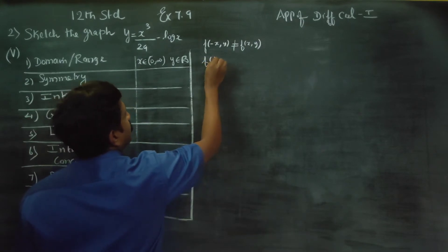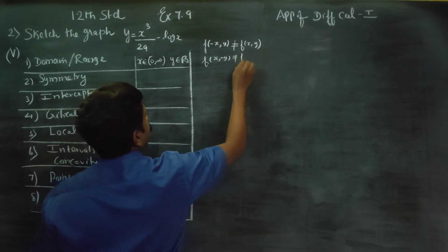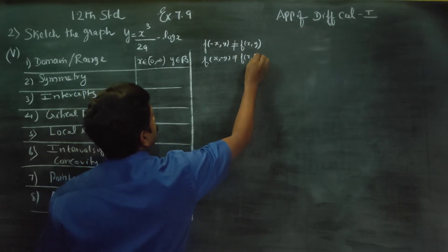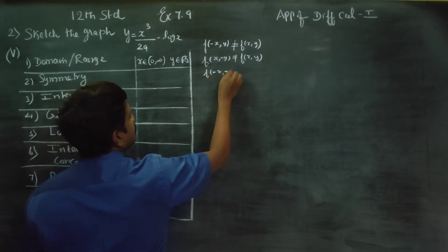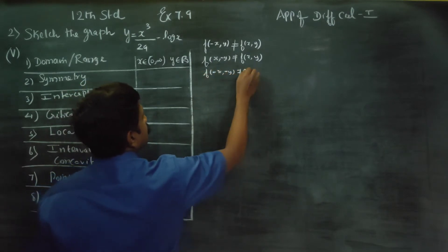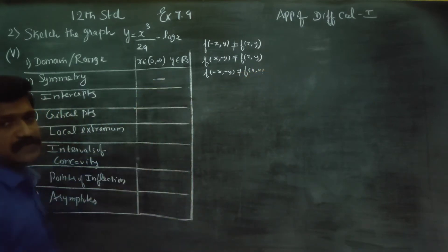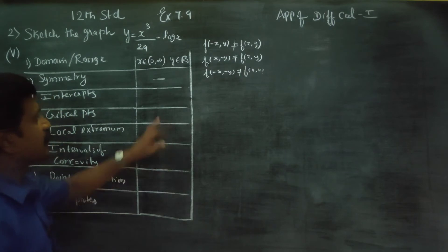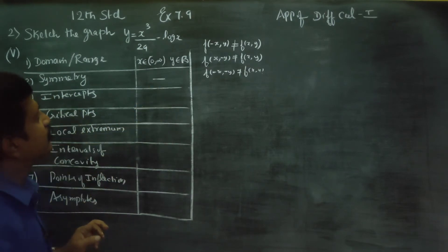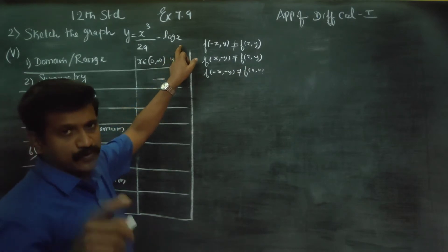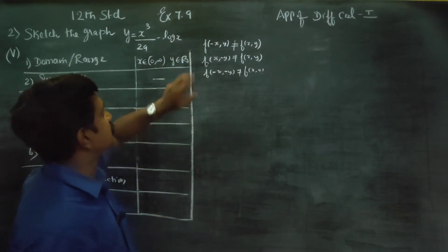f of minus x is not equal to f of x, that's why f of minus x is not equal to f of x. That's why there are no symmetric properties. Moving on to intercepts — put x is equal to 0. x equal to 0 does not exist.